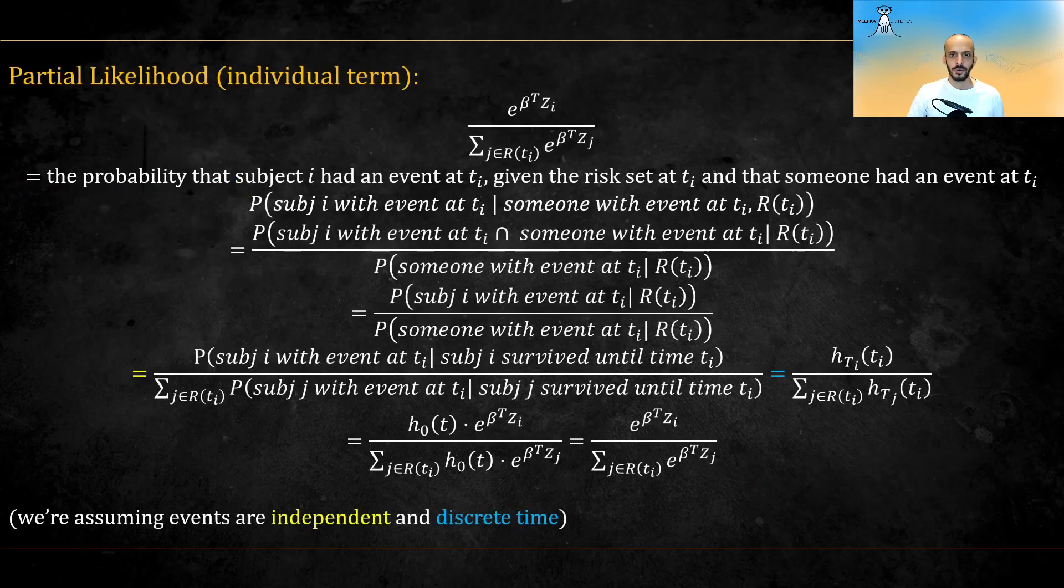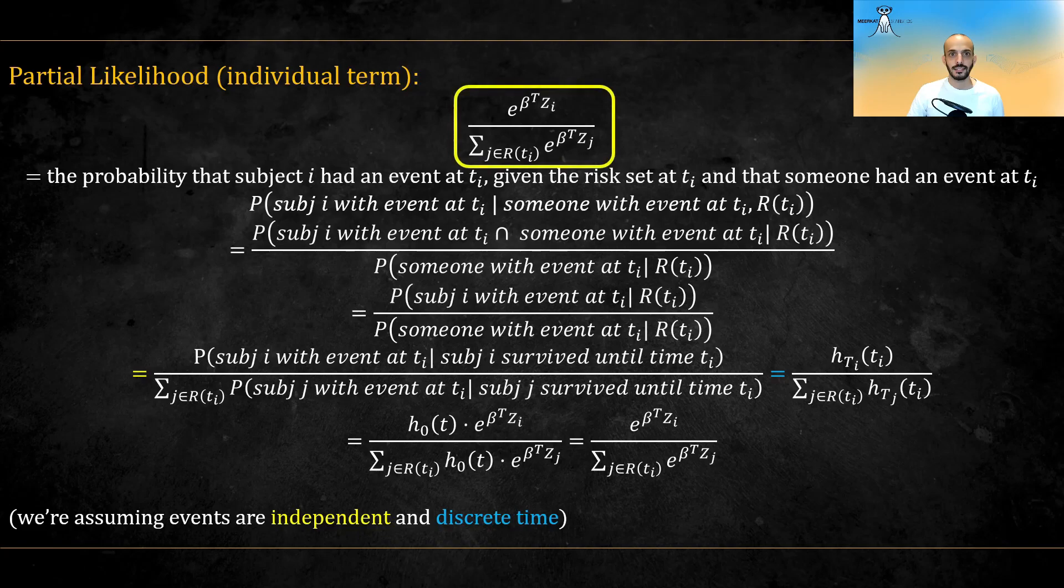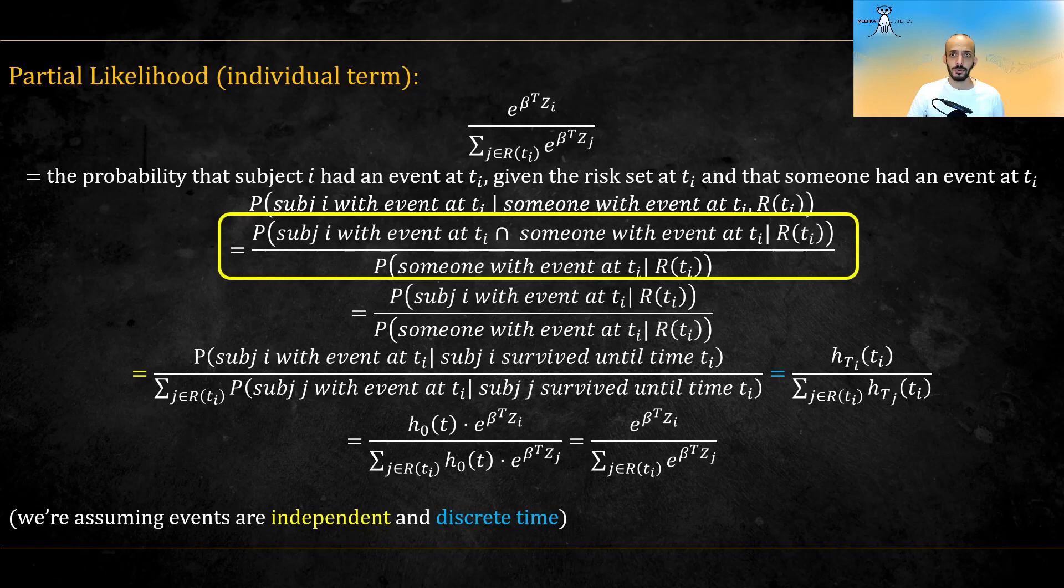So starting with each individual term, let us see that this is indeed equal to the probability that subject i had an event at ti, given that someone had an event at ti and the risk set. Using the definition of conditional probability, we get that this is equal to this. Now, the intersection will be only subject i with event at ti.